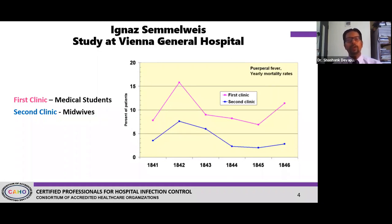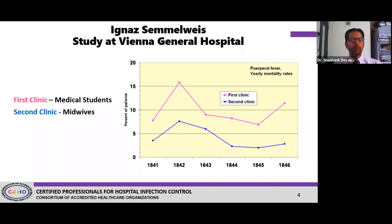What he said was that during autopsy, something was being attached to the medical students' hands which was causing the puerperal sepsis. We didn't have the germ theory back then, but he knew there was something on their hands causing it. Unfortunately, during his lifetime, Dr. Semmelweis never received the recognition he deserved. He published a document in 1863 just before he passed away, but it took many years for people to realize that not washing hands was the reason for those infections.